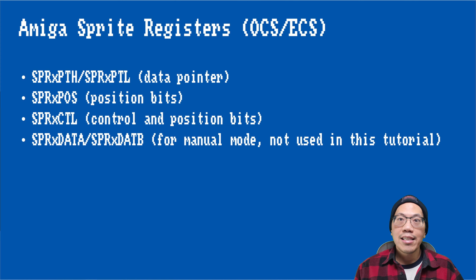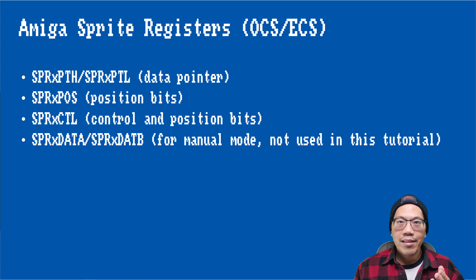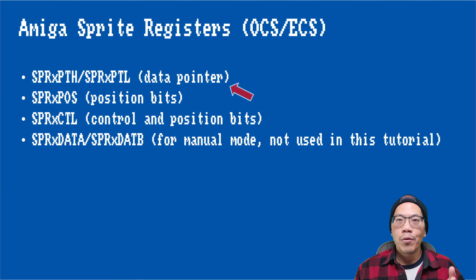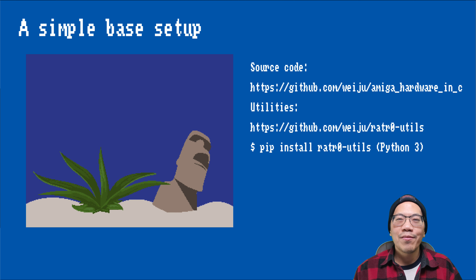These are the custom chip register groups that are responsible for sprite display. The X stands for a number between 0 and 7 for each of the individual sprites. In this episode, we actually only have to deal with the registers for the sprite data pointers. Let's start writing actual code.